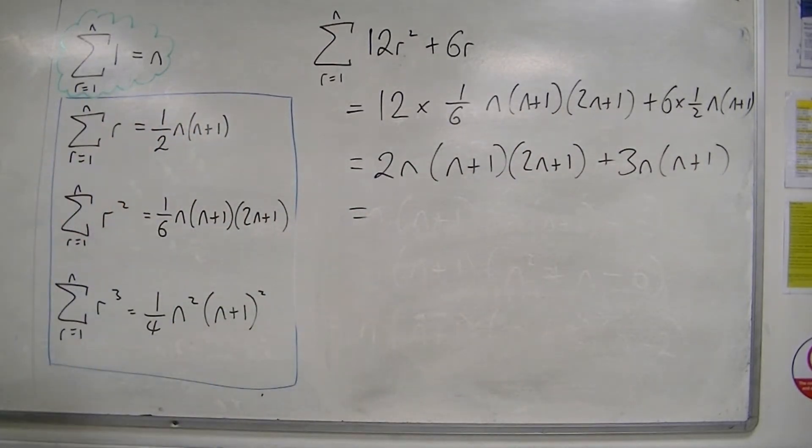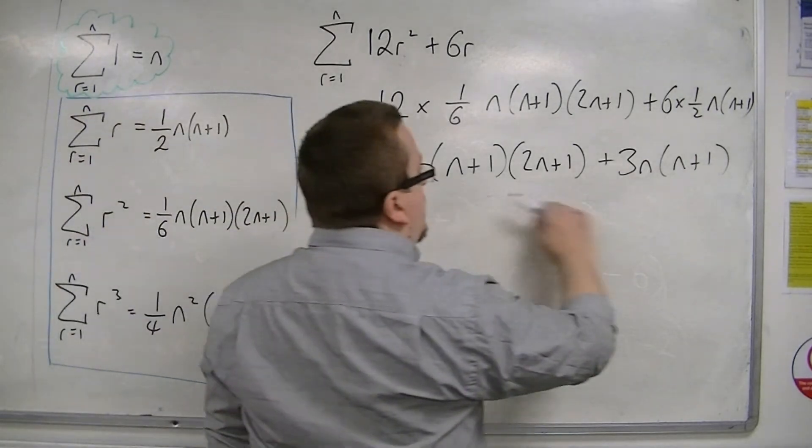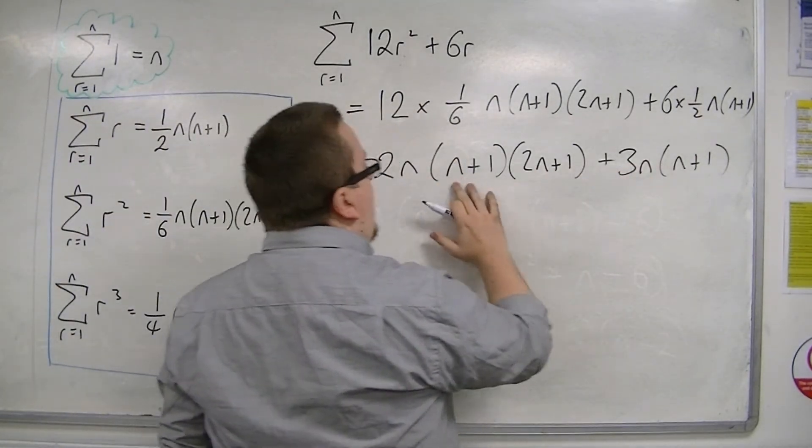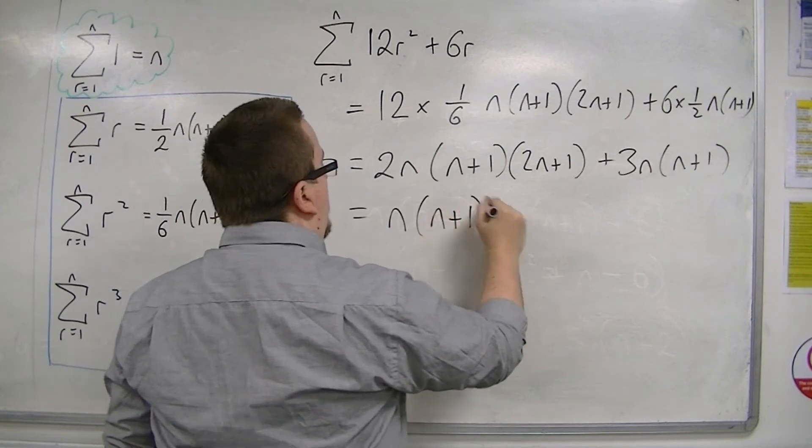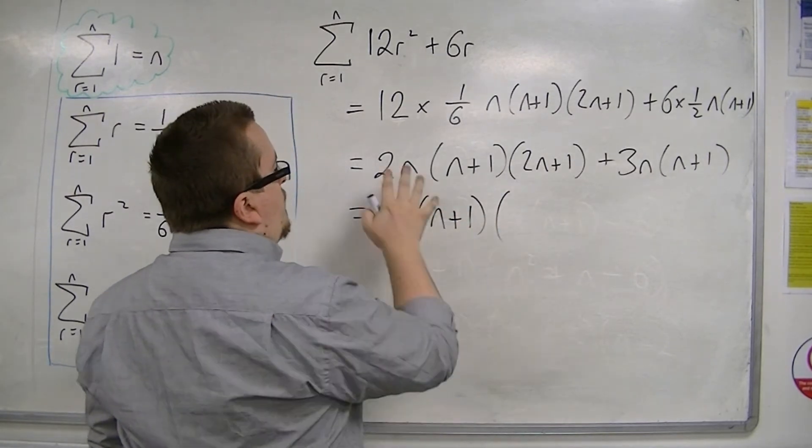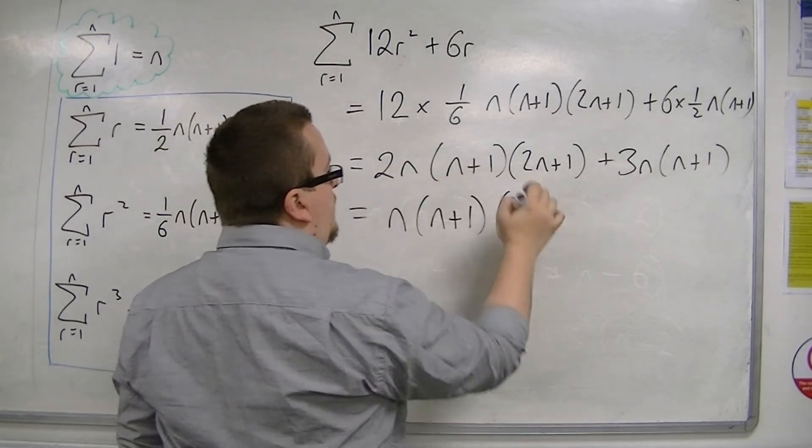Now it's time to factorize. We have an n in both, and an n plus 1 in both, so n and n plus 1. We've got 2 left, so 2 times 2n plus 1.